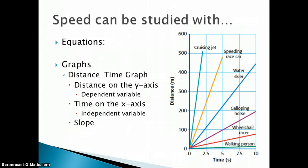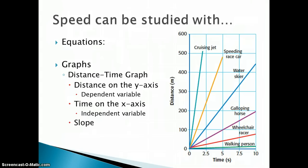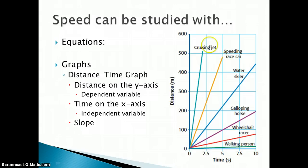Notice how the graph is set up. Time is along the x-axis — time is the independent variable. The distance traveled is on the y-axis, and that distance is dependent. How far it goes depends on how much time has elapsed. So we start to see all these slopes as you go through here — here's the cruising jet, the speeding race car, the water skier. Notice that the steeper the slope is, the faster it's moving, or the faster the speed is.